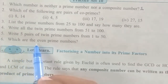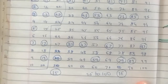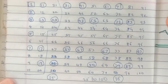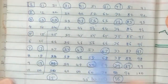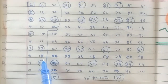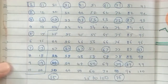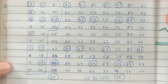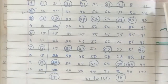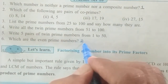Question number 6: which are the even prime numbers? Looking at the prime numbers from 1 to 50, we check odd and even numbers. 2 is the only even prime number. So the answer is only one number, and that is 2.